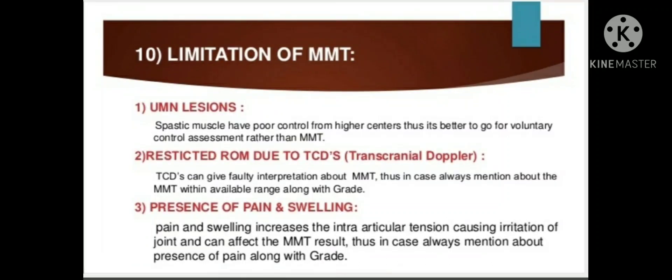Limitations of MMT: Upper motor neuron lesion — spastic muscles have poor control from higher centers, so voluntary control assessment is preferred over MMT. Restricted ROM — contractures can give faulty interpretation of MMT results. Presence of pain and swelling — pain and swelling increase intra-articular tension, causing joint irritation and affecting MMT results; always mention the presence of pain along with the grade.